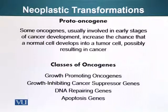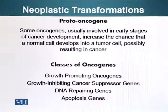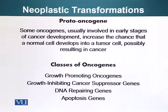Some oncogenes are usually involved in early stages of cancer development, increasing the chance that a normal cell develops into a tumor cell, possibly resulting in cancer. We are going to talk about four classes of oncogenes or proto-oncogenes: growth-promoting oncogenes, whose products cause cells to grow, divide, or multiply; growth-inhibiting cancer suppressor genes; DNA repairing genes, which function in DNA repair — if DNA damage occurs and repairing genes cannot perform their function, it can result in cancer; and apoptosis genes, which sense whether the cell is performing normally, and if not, cause cells to go through apoptosis, or cell suicide.